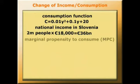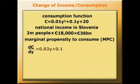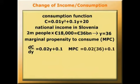Let's find the marginal propensity to consume. To find this, we differentiate C with respect to y. dc by dy equals 0.02y plus 0.1. Now, since current y is 36, the marginal propensity to consume is 0.02 times 36 plus 0.1, which equals 0.82.